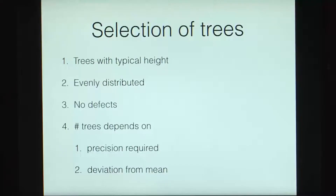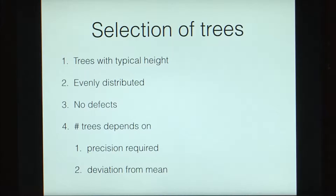We will select perfect trees of a typical height that are spaced in a typical fashion, and we will use the measurements of those trees only to derive our general volume table. How many trees do we select? This depends on the precision required and on the deviation from the mean.